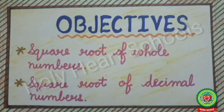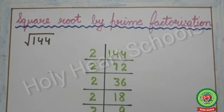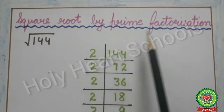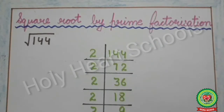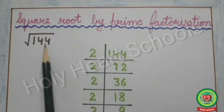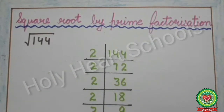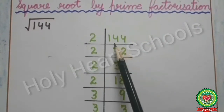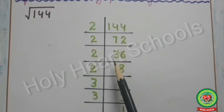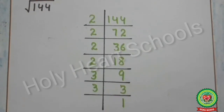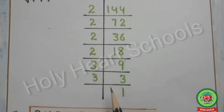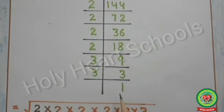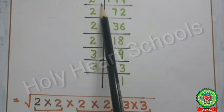In our previous classes we have already done a method to find a square root — that method is called the prime factorization method. Let's recall this method. Here we need to find the square root of 144. Under the prime factorization method, the first step is to find the prime factors of that number, which is 144. I have found all the prime factors of 144 using the ladder method or LCM method.